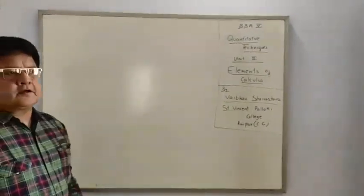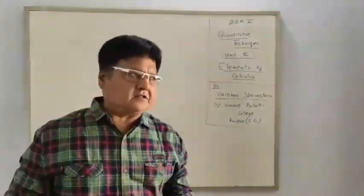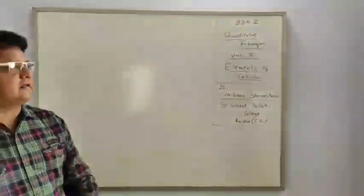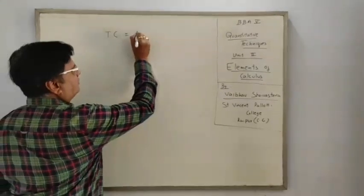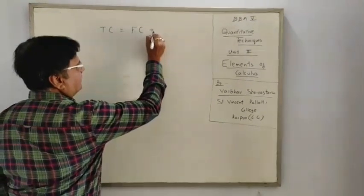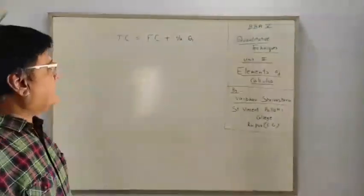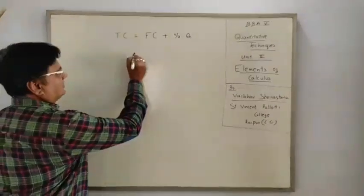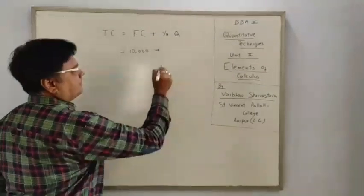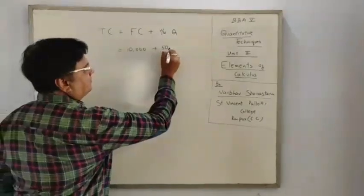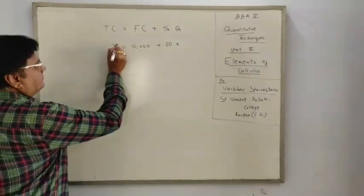You must be knowing from these four semesters some things related to linear equations. If I give you a practical example — suppose total cost. You know that total cost is fixed cost plus variable cost per unit into quantity. Say for example, total cost is Rupees 10,000, and variable cost per unit is Rupees 50. Quantity we will represent as X, and total cost will be Y.